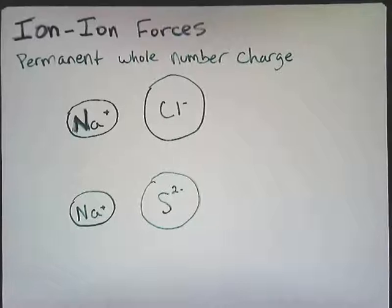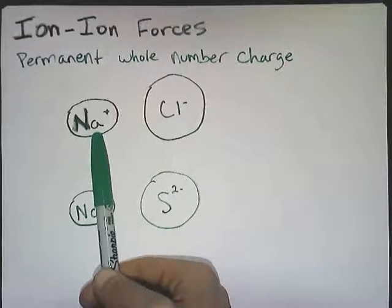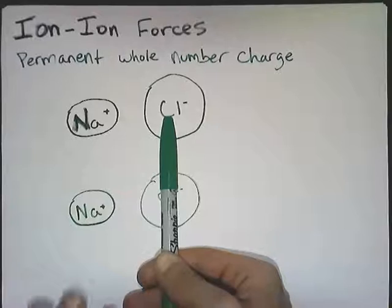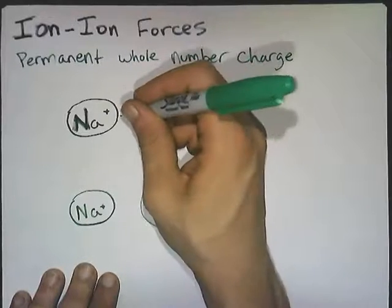So what's the main deal? Well, opposites are going to attract. So a sodium ion has a positive charge, a chlorine ion has a negative charge, opposites attract, these two will be attracted to each other.